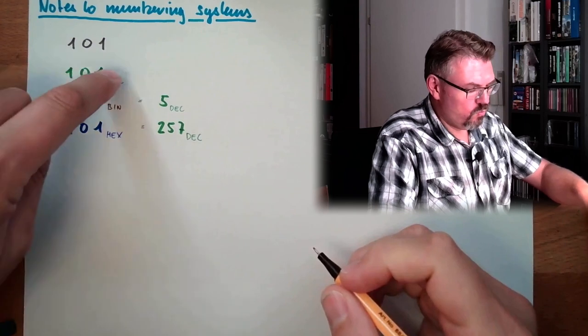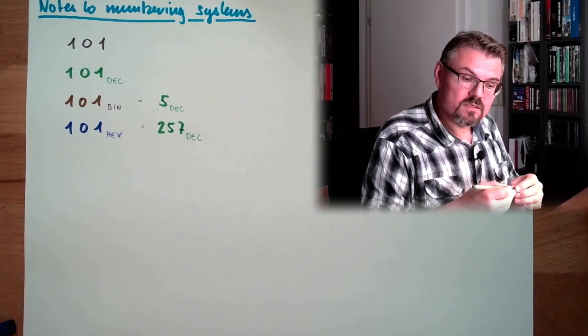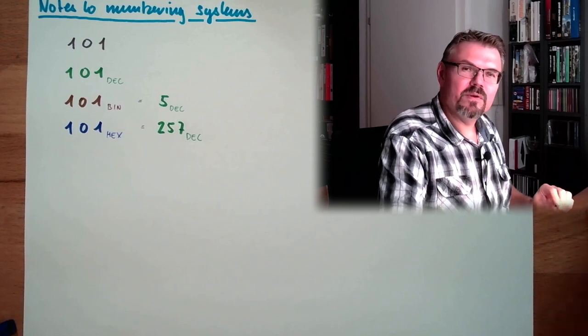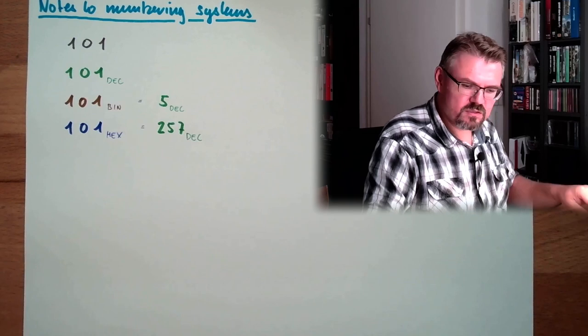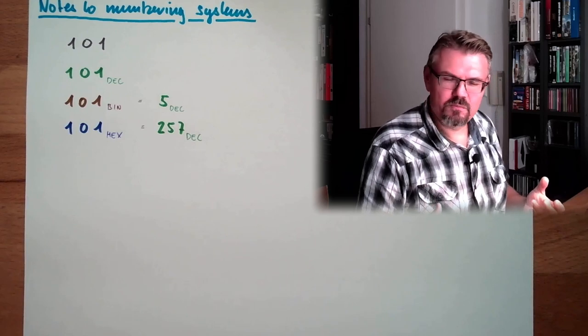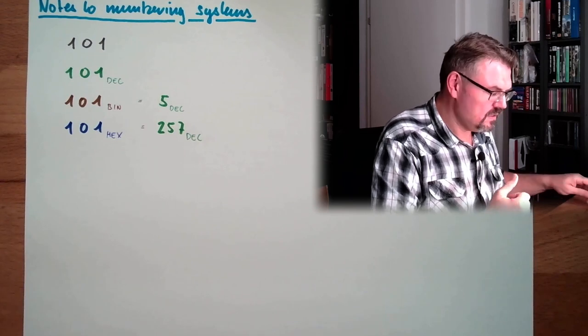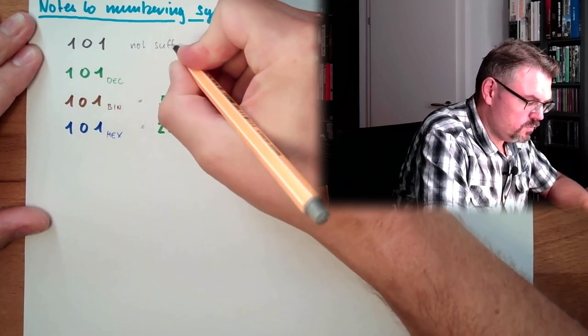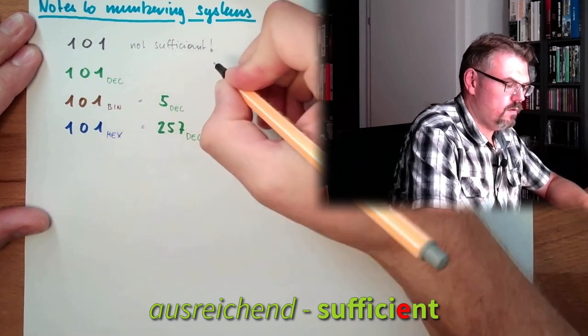And there you see, that's a difference from 5 to 257. Everything is possible. So it is important to know what a number is. Because the different numbering systems share the symbols. And we need to know how to interpret the number. Because just by writing it out, it is not unique. It is not sufficient.